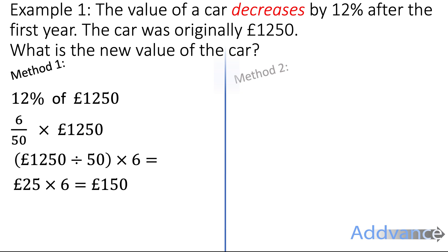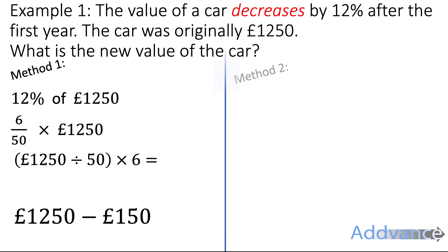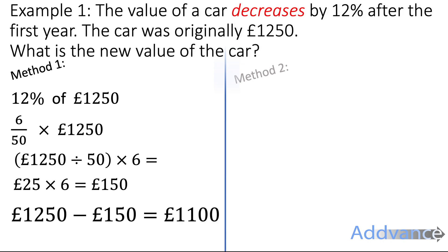But it says it decreases by that amount, so we're going to subtract £150 from the original amount. 1250 − 150 is £1,100, and that is the correct answer.